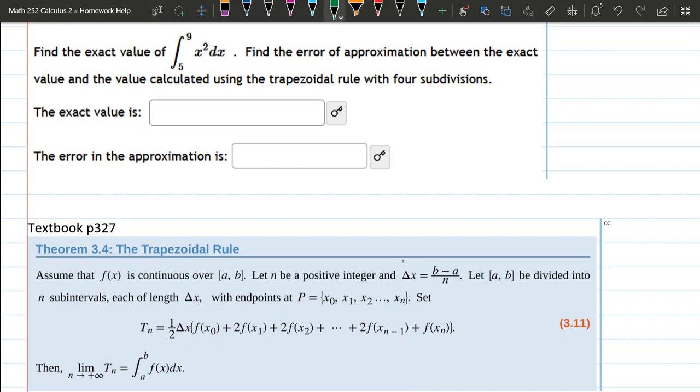So we have our x squared function. Let's write down. So f of x is x squared. We have our a and our b. a is the little x value, which is 5. b is 9.